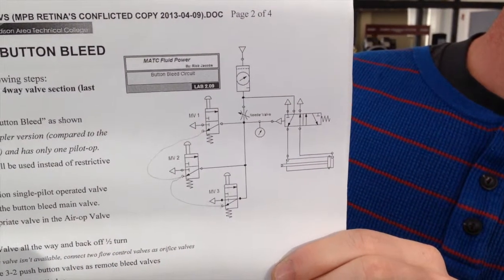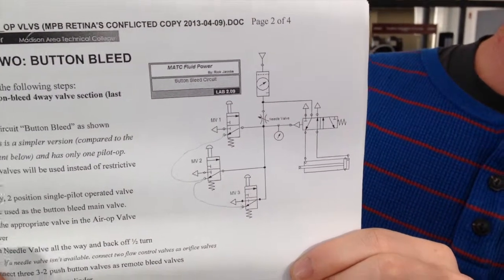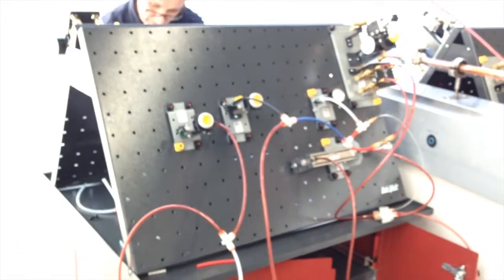All right, we're demonstrating the button bleed circuit. That's how it looks in the diagram. That's how it looks on the panel.